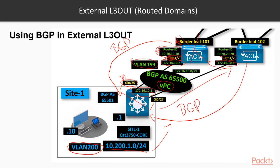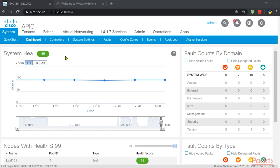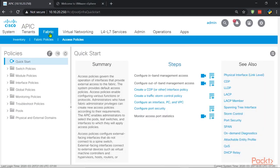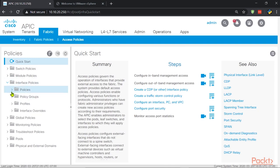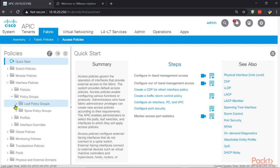Let's get started configuring the external L3-Out and the interface profile. I'll do a quick pause before the peering section so you're clear on the next steps. I'm now in the ACI APIC fabric, going to the fabric tab, access policies.